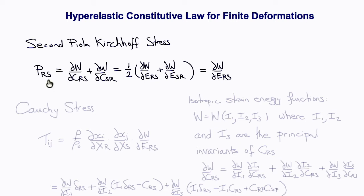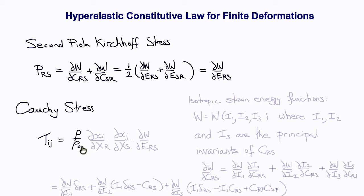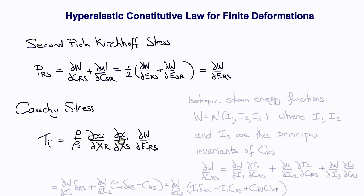Now that we have the Lagrangian constitutive law — analogous to T_ij as a function of epsilon_ij — we can invert the previous equation defining the Piola-Kirchhoff stress to recover the Cauchy stress, which is the most physically useful quantity. That formula is: T_ij times rho/rho_nought times del x_i / del x_R times del x_j / del x_S times del W / del E_RS, which equals P_RS. This is just the earlier formula inverted, where one term is 1 over det(F) and the other two terms are both components of F.